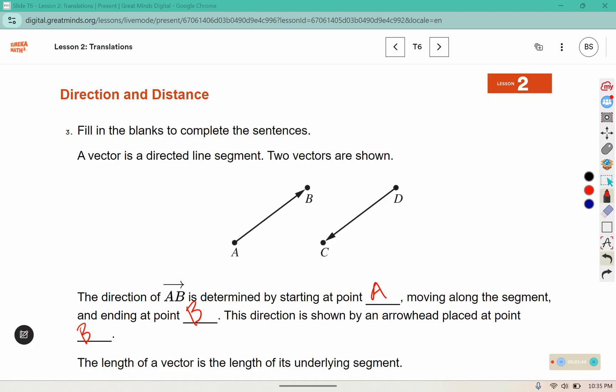This direction is shown by an arrowhead placed at point B. We start at A, and head to B, and the arrowhead is placed on B. The length of a vector is the length of its underlying segment, so how far is it from A to B?